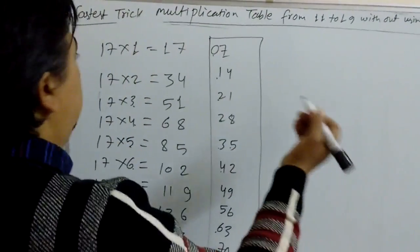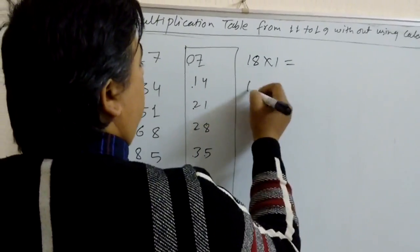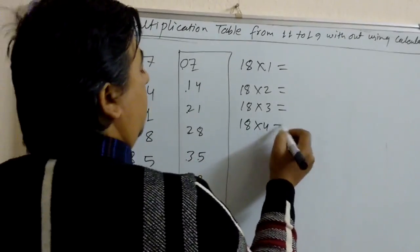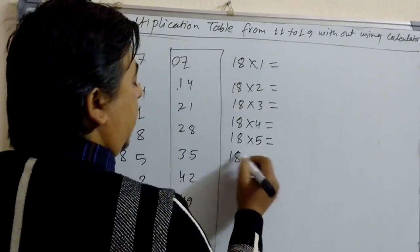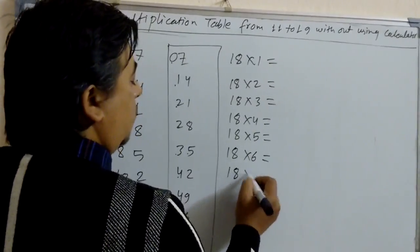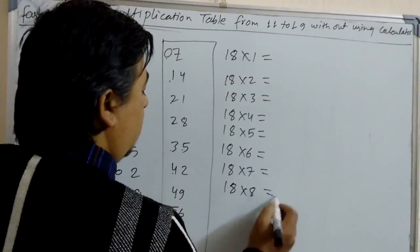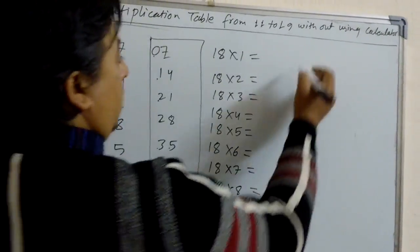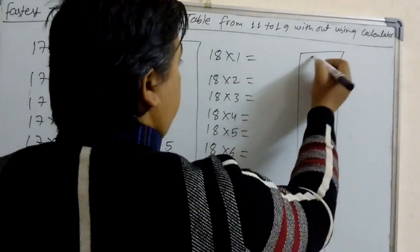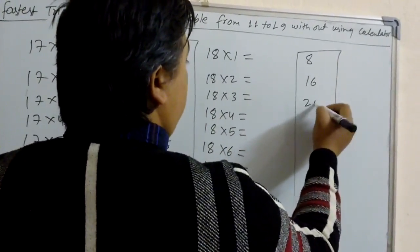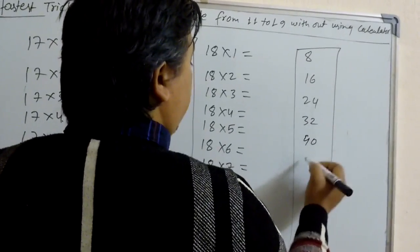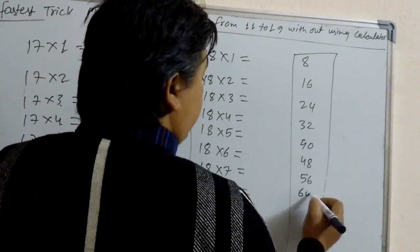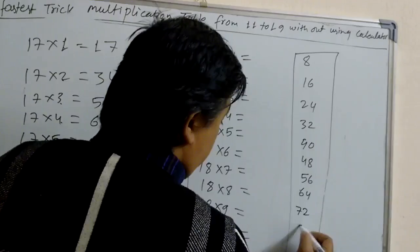And let's learn the 18 table: 18×1, 18×2, 18×3, 18×4, 18×5, 18×6, 18×7, 18×8, 18×9, 18×10. For this we have to know the table of 8: 8, 16, 24, 32, 40, 48, 56, 64, 72, 80.